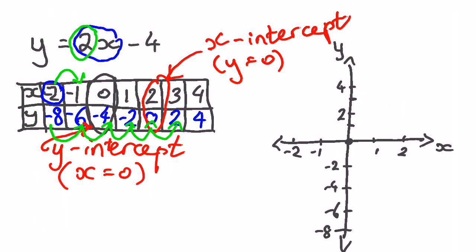Think of gradient like steps. If every time you measure 1 metre across, it goes up by 2 metres, that's steep steps. But if every time you measure 1 metre across you only go up half a metre, that's not so steep. Gradient tells us about the steepness of the line. In this case, every time x increases by 1, y increases by 2.